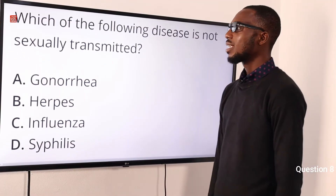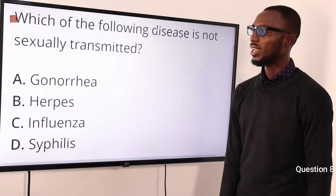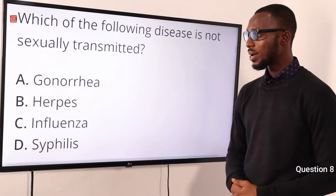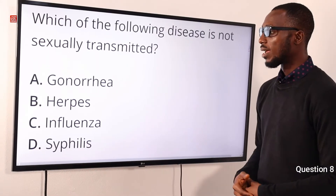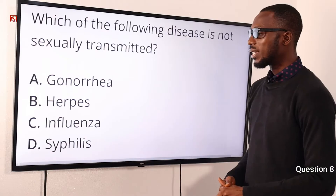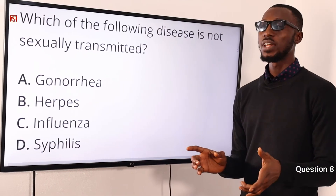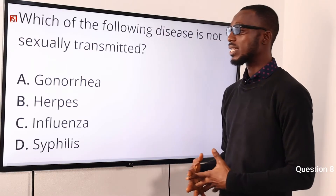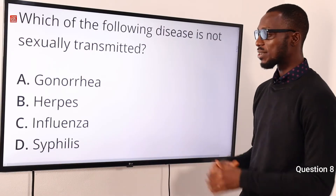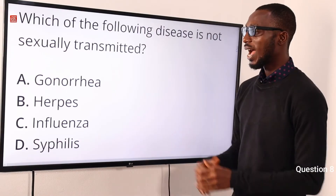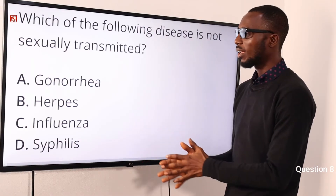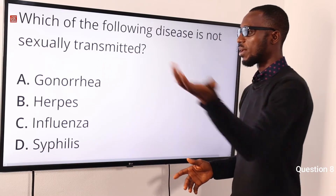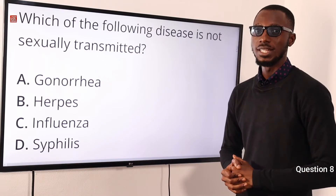Question 8. Which of the following diseases is not sexually transmitted? Gonorrhea — sexually transmitted through sexual intercourse. Syphilis — sexually transmitted. Herpes — sexual intercourse as well. For influenza, you can think of it as the flu — it is caused by the influenza virus and is airborne. So: airborne, sexual, sexual, sexual. The correct option is option C for influenza.